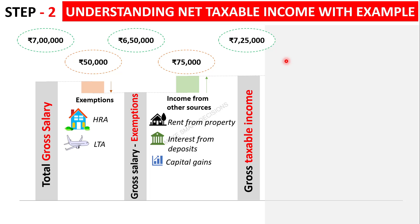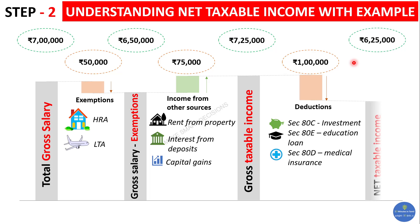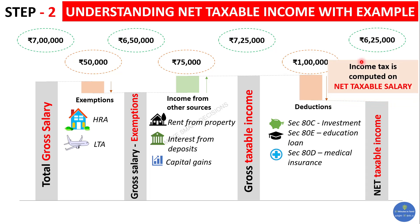In this example, let's say this person claims a total deduction of one lakh under Section 80C. His net taxable income then becomes six lakh twenty-five thousand — that is seven lakh twenty-five thousand minus one lakh. He will compute his income tax on this net taxable income of six lakh twenty-five thousand.